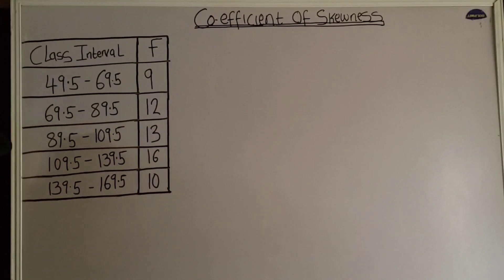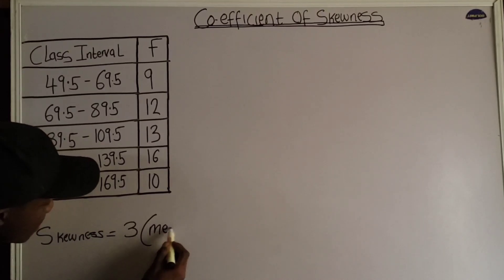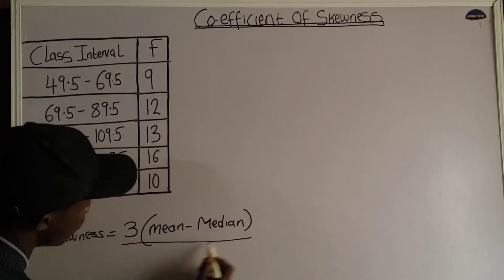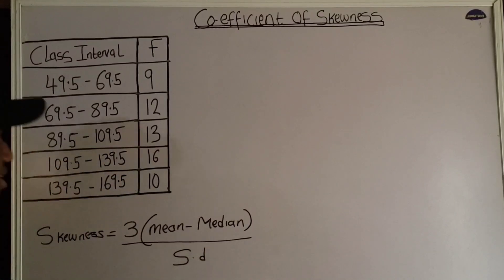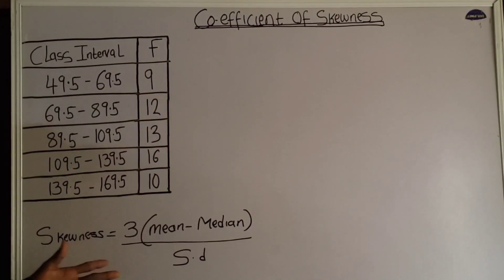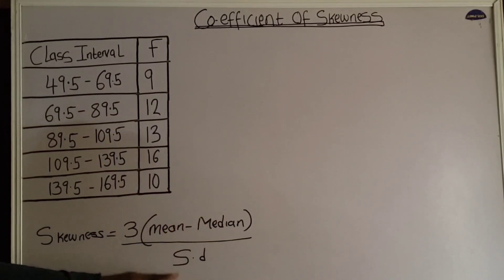According to Karl Pearson, the coefficient of skewness is given by: skewness equals three times the mean minus the median, all over the standard deviation. That is the formula for calculating the coefficient of skewness. This formula tells us what we are going to need in our table — we need to calculate the mean, the median, and the standard deviation of this data.